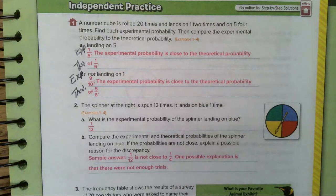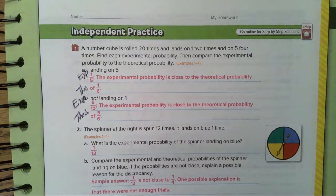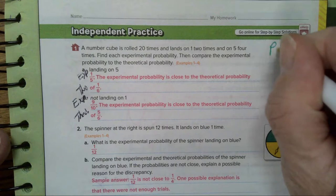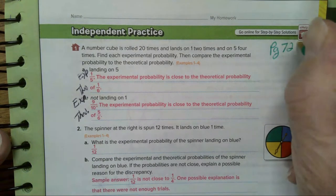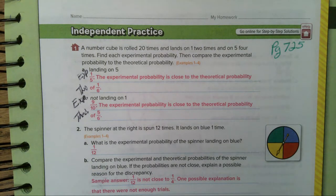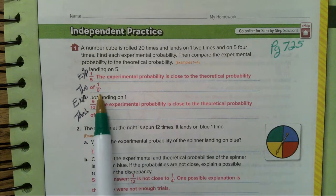Today we are going to go over the answers from yesterday's assignment. Here we have the answers to page 725. In letter A, landing on a five, the experimental probability is one out of five, which is close to the theoretical probability of one out of six.